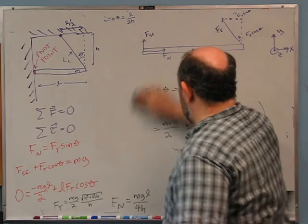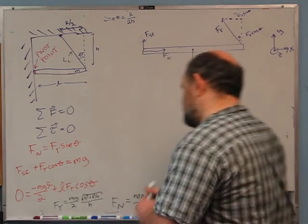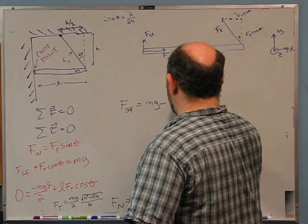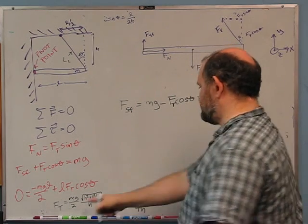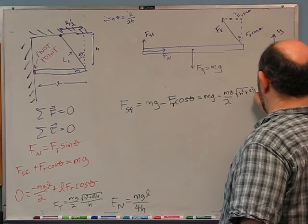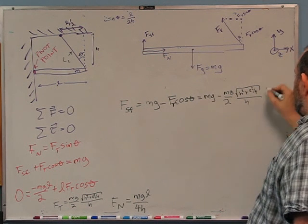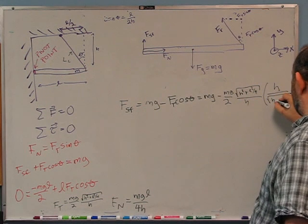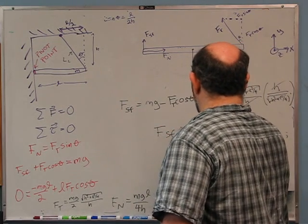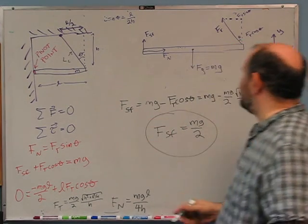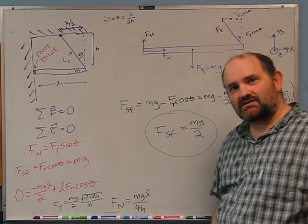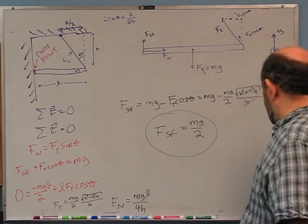Notice the normal force is positive, which is good — a negative value would have meant we needed tension. Now all that's left is static friction, Fsf equals mg minus Ft cosine theta. Substituting Ft and cosine theta: it's mg minus mg over 2 times the square root of h squared plus L squared over 4 over h, times h over the square root of h squared plus L squared over 4. Everything cancels, and Fsf equals mg over 2. So the static friction will have to be half of gravity in order to make this work. That is the first problem.